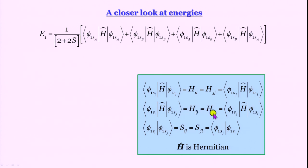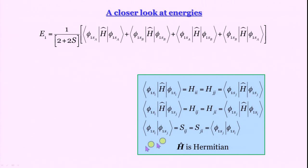H_ij equals H_ji — this follows from the property of Hermitian operators, specifically the turnover rule: integral phi_1 H phi_2 equals integral phi_2 H phi_1. For this course we take it axiomatically. We already know the overlap integral, which is straightforward. We will now write the expression for energy in terms of these integrals.